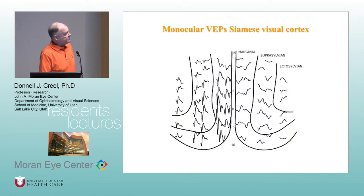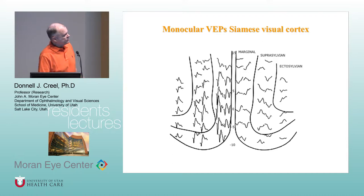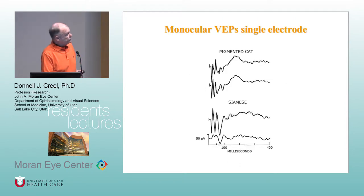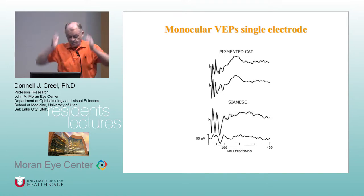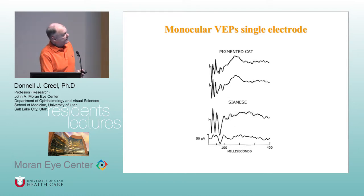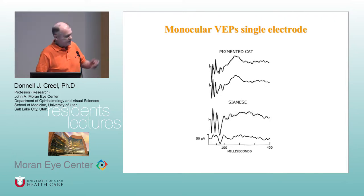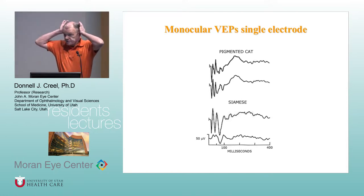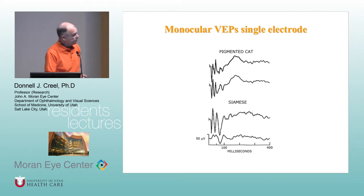If you map the visual cortex of a Siamese cat, you find that almost all of the input is to the contralateral hemisphere and very little, fragmented input on the ipsilateral side. If you put a single electrode on each side of the visual scalp — in a pigmented cat it's about 65-35, so close at that crude recording level you can't tell any difference. Whereas in a Siamese cat, you see a tremendous difference between the crossed and uncrossed potentials recorded from the back of the head. This is the underlying basis for being able to record this misdistribution in human beings.